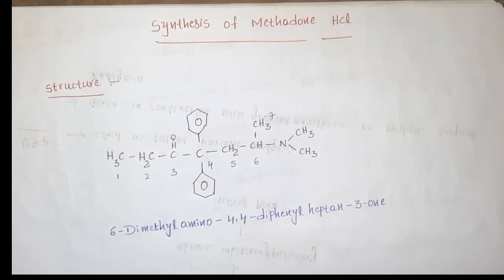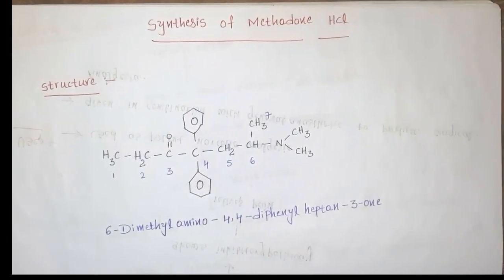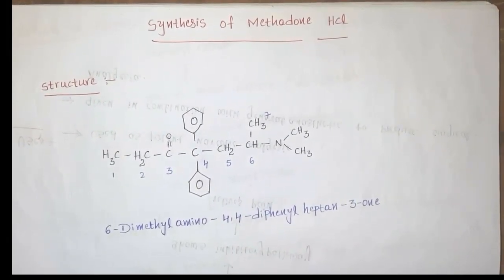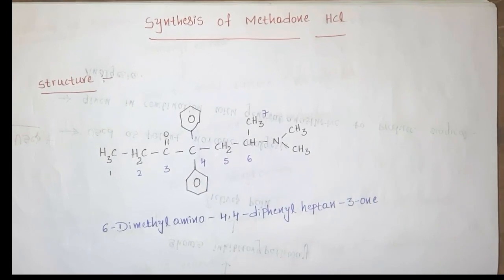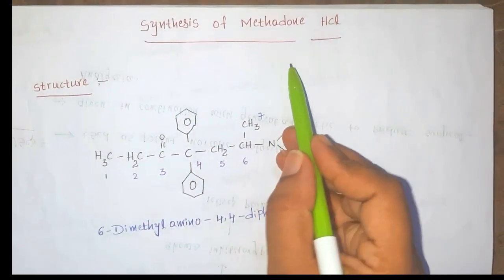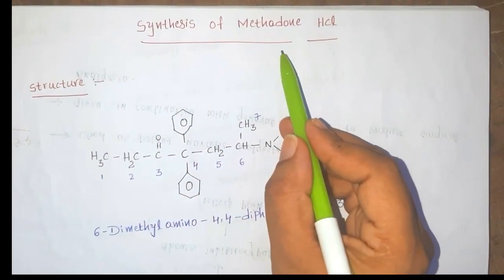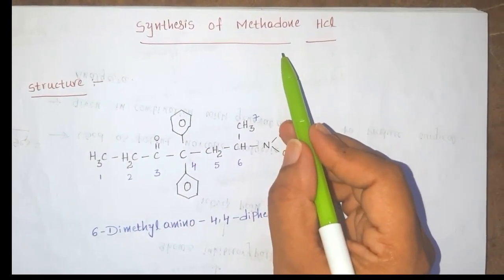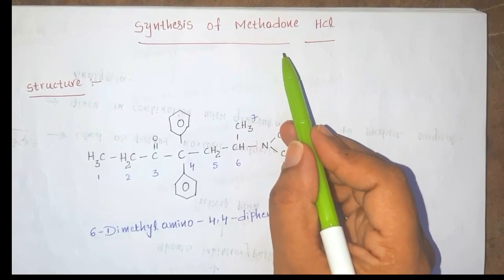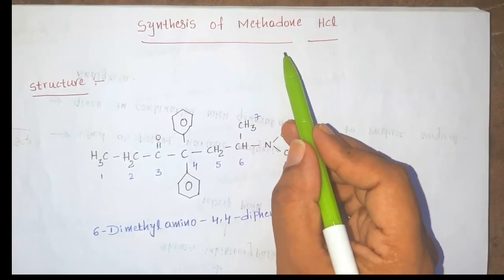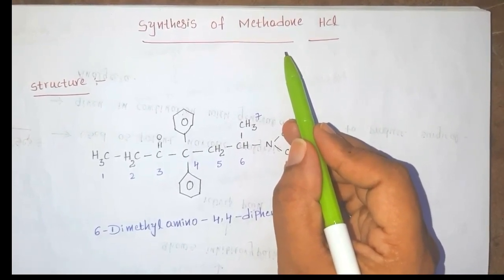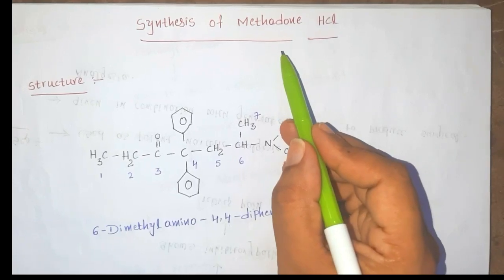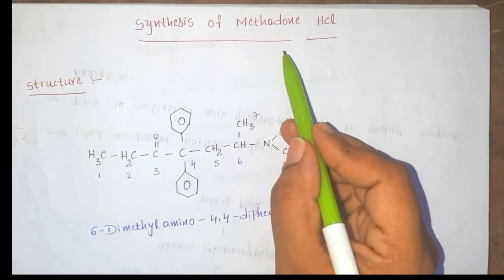Hello everyone, myself Somya, welcome to Case and Pharma Tutorials. Today we are going to study about the synthesis of methadone. Methadone comes under the therapeutic category of opioid analgesic, under the class of diphenyl heptanones or phenylpropyl amines.